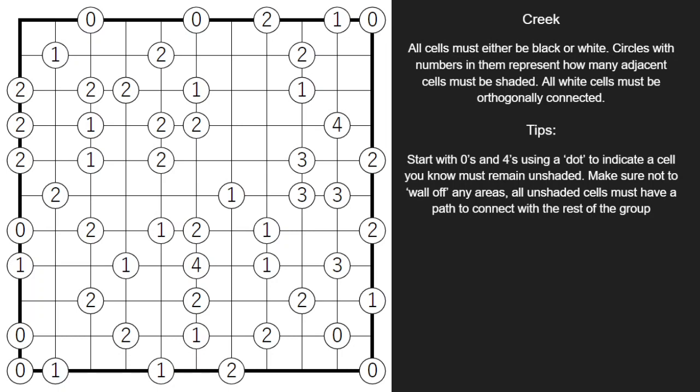How it works is you're going to be shading in some cells and leaving others white. The circles with the numbers in them represent how many adjacent cells must be shaded in. And lastly, all the white cells must be orthogonally connected to one another.